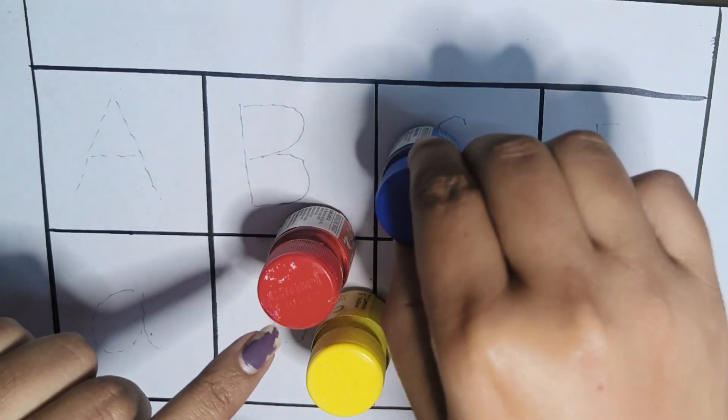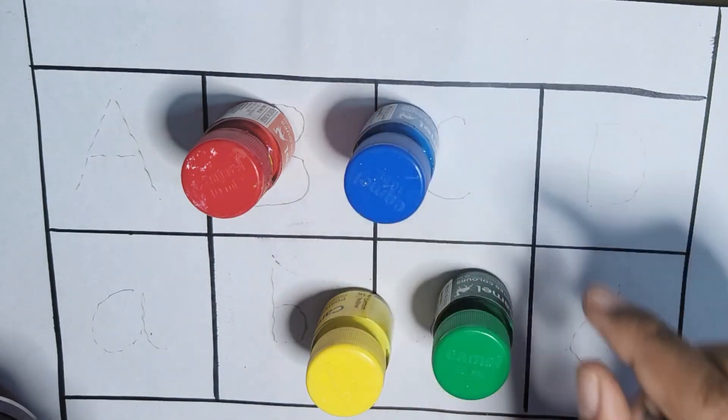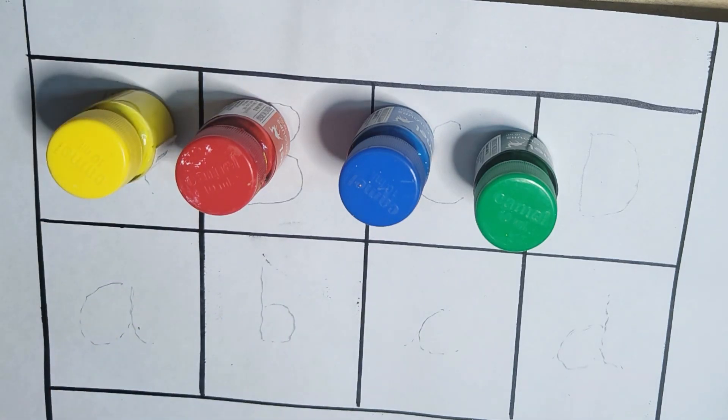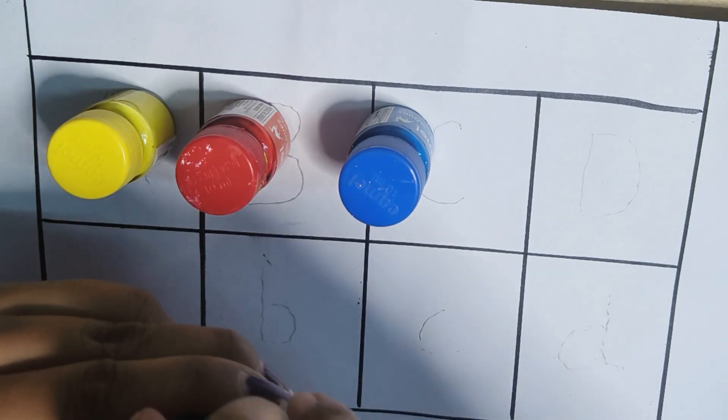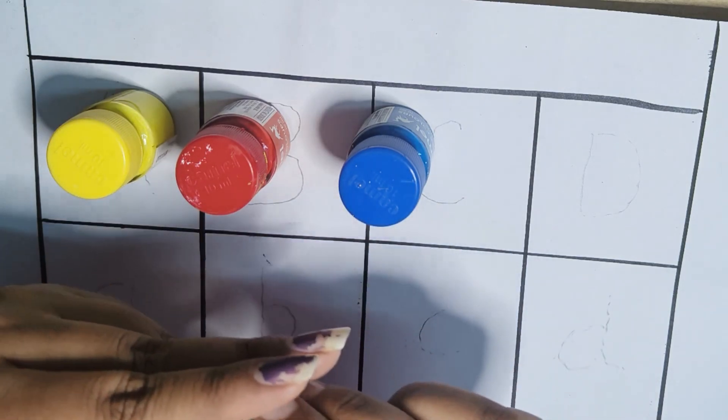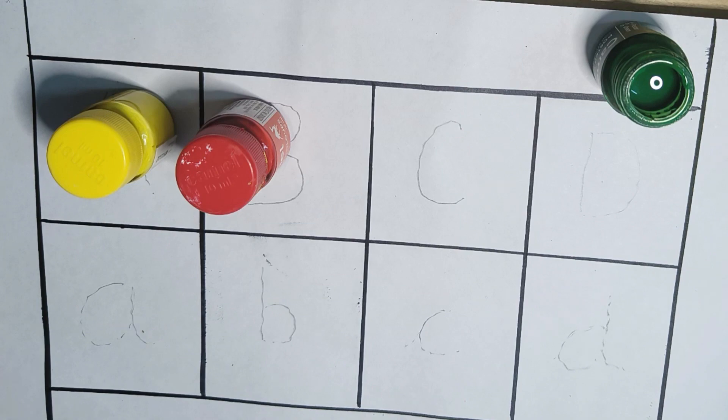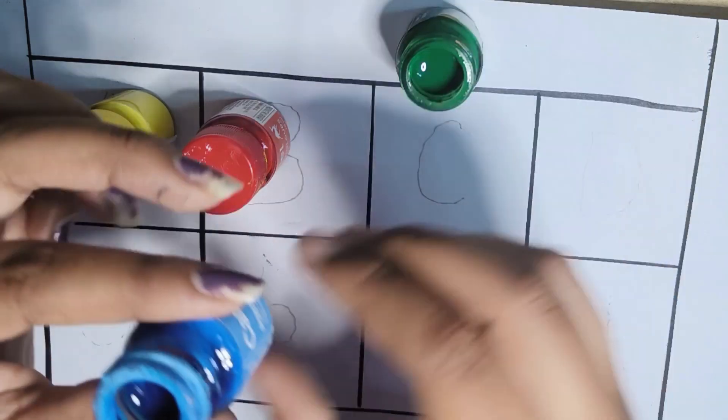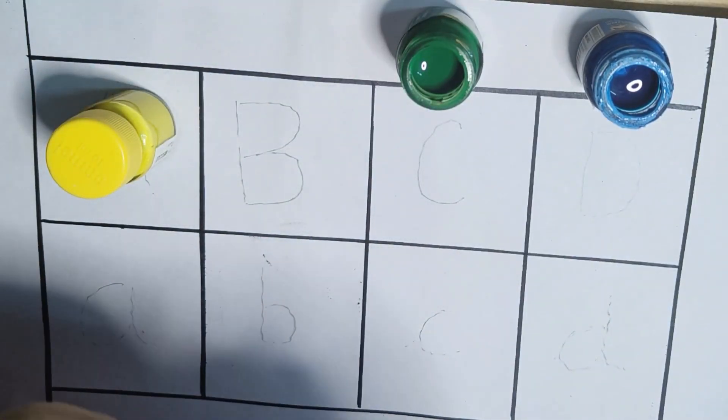Blue color, red color, light green color, and yellow color. This is light green color. This one is blue color, this is red color.